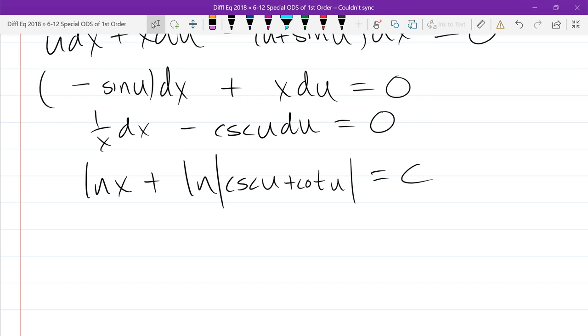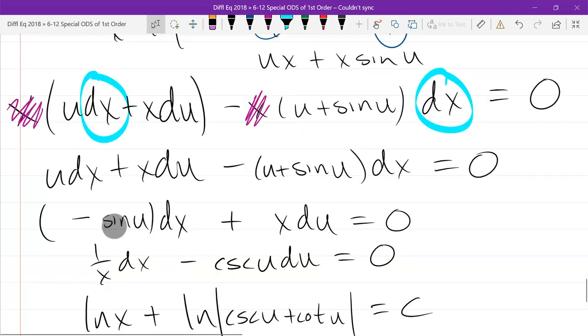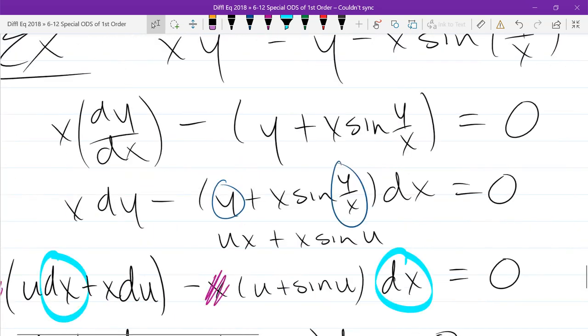What's the one? I can't leave it in this form. For what reason? We've got U's in here. U, we need to unsubstitute back out. That was Y over X.